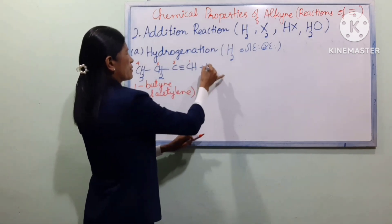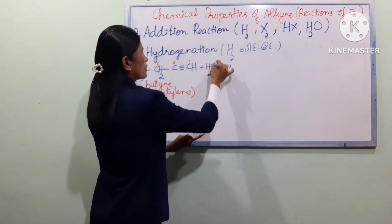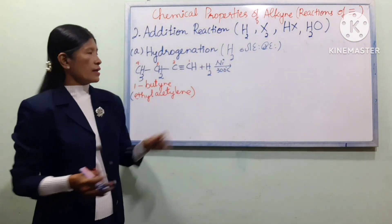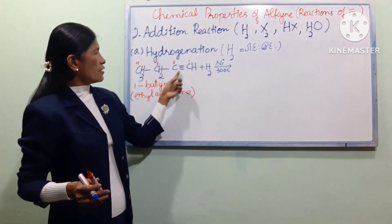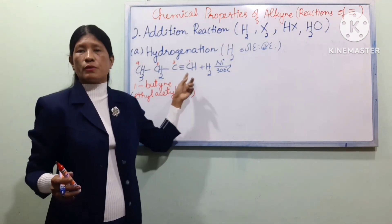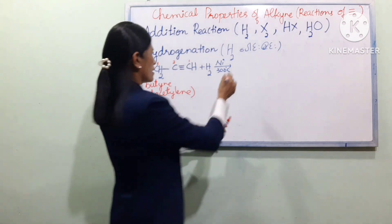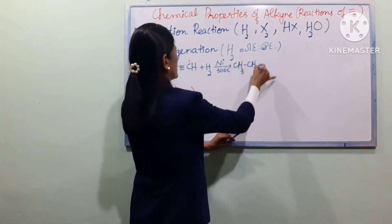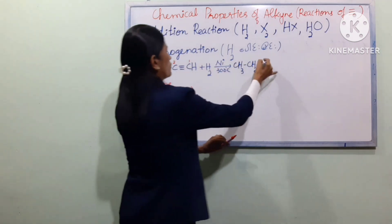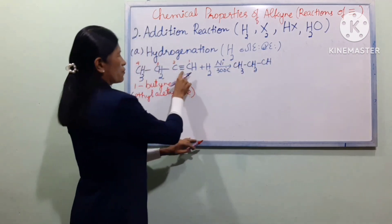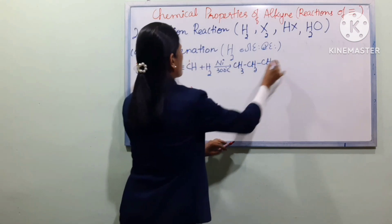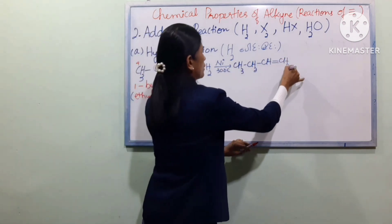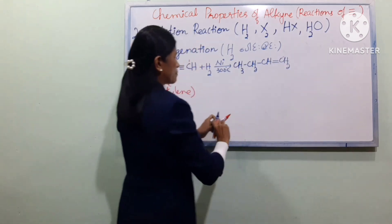We can also add H2O to alkynes at 300 degrees Celsius. Using H3O+ as a catalyst, hydration of the alkyne proceeds at elevated temperatures to give a carbonyl product.